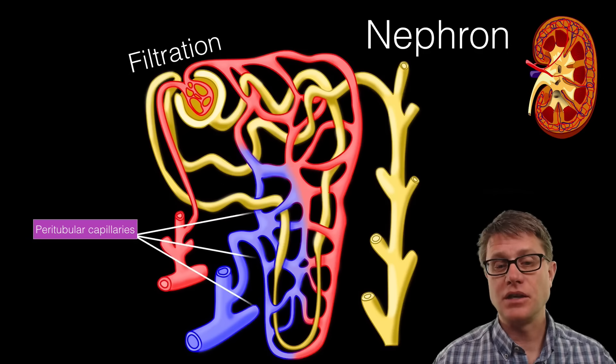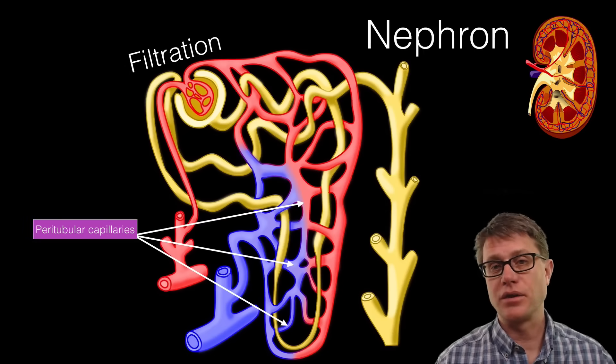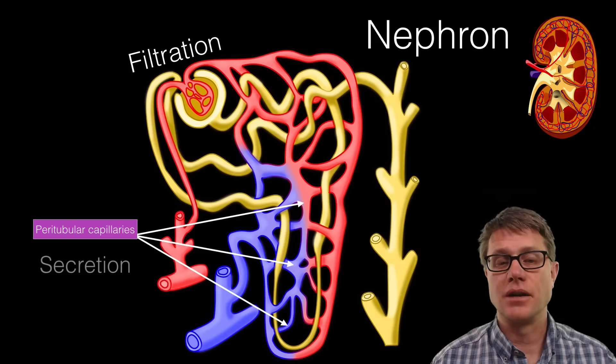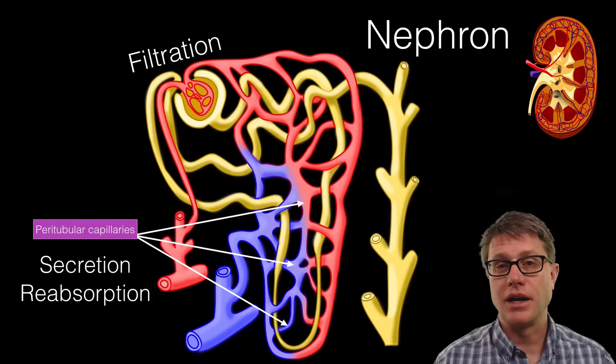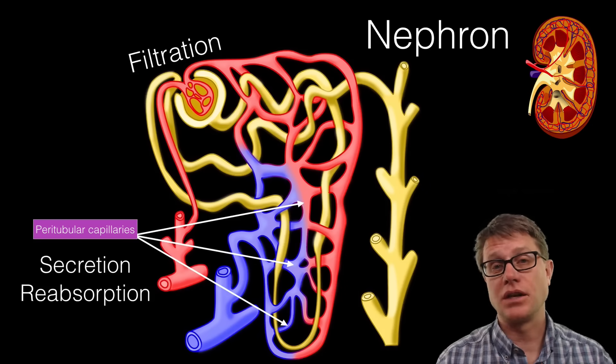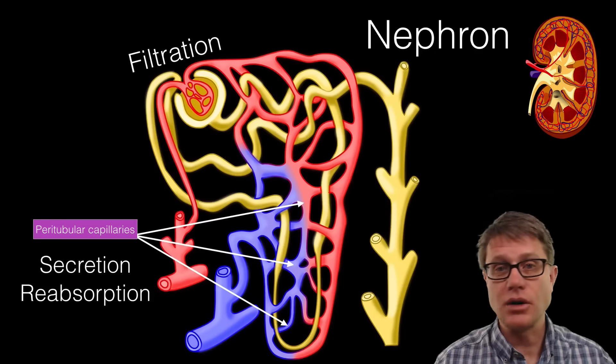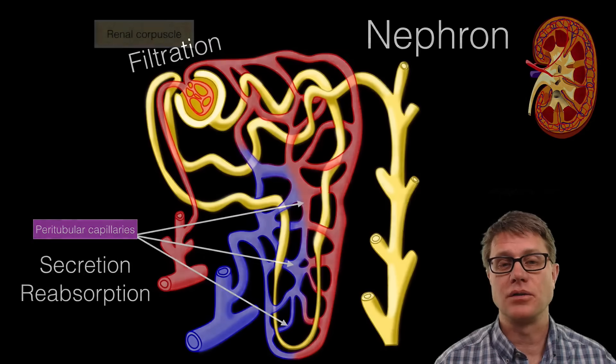The blood vessels continue to wrap around the rest of the nephron as the peritubular capillaries before they eventually leave. What's going on along this surface area is secretion and reabsorption. Secretion is when we're taking material in the blood that wasn't filtered out and getting rid of that. Also, there's some material in the filtrate—glucose, water for example—that we want to reabsorb back into the circulatory system.